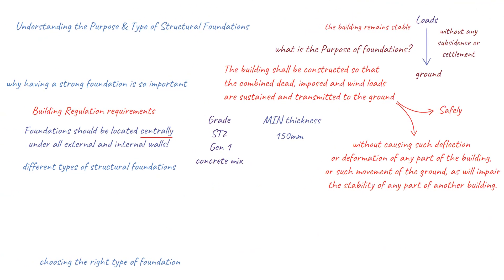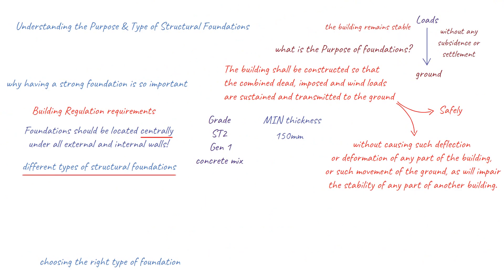Types of Foundations: The most commonly used type of foundation is a shallow foundation, typically used for smaller buildings such as single-family homes or small garage structures. It involves digging down into the ground to create a firm base that can support the weight of the structure above. This type requires less excavation than others and has lower material costs, making it ideal for those on a budget. Shallow foundations consist of strip, trench-fill, pad and raft foundations, depending upon the soil condition and load requirements.